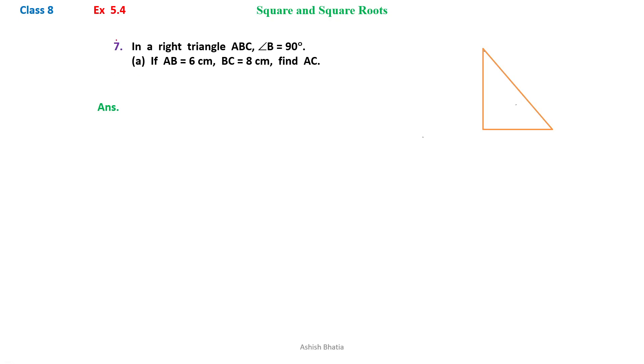Exercise 5.4, question number 7. In a right angle triangle ABC, right angle at B, so we can see that angle B is 90 degrees.